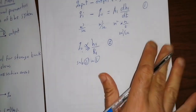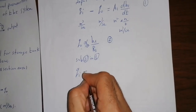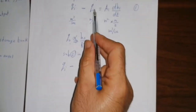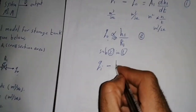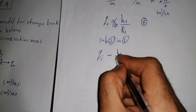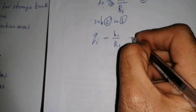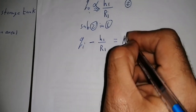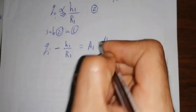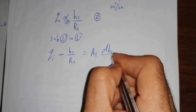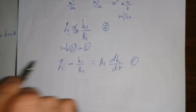Substituting Q_out = H1/R1 into the mass balance equation gives us: QI minus H1/R1 equals A1 * dH1/dt. This is equation 2 of our mathematical model.